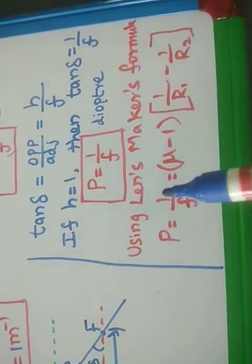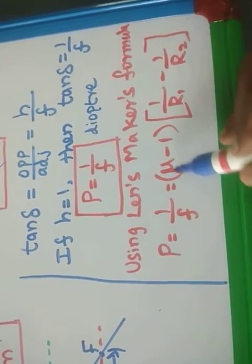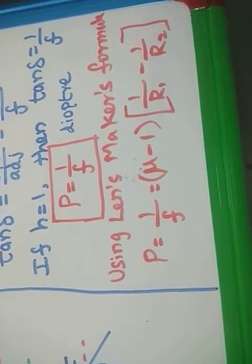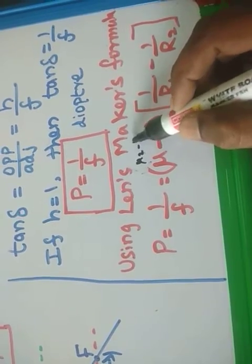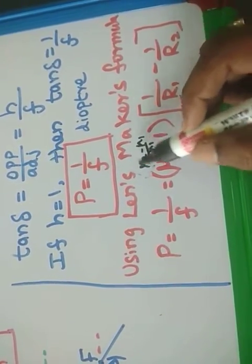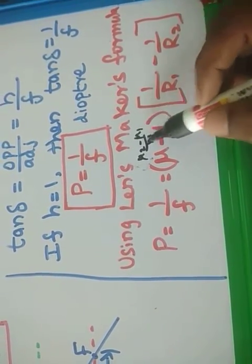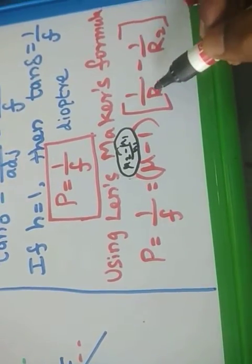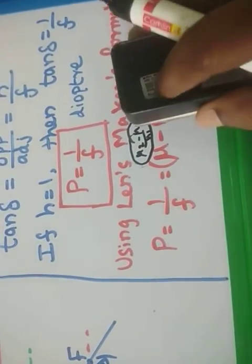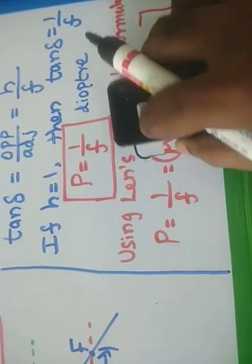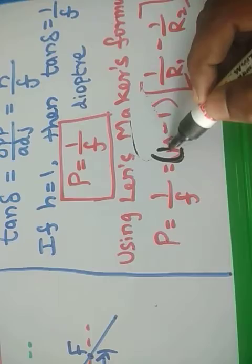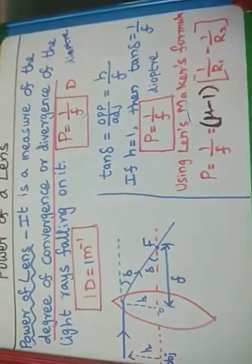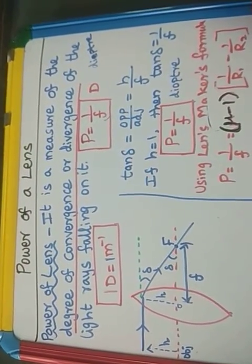By using the lens maker's formula, we derived that 1 over f equals mu minus 1. Don't confuse students — in the lens maker's formula, 1 over f equals (mu2 minus mu1) over mu1. Here mu2 is the refractive index of the lens medium and mu1 is the surrounding medium. Since the refractive index of air is 1, it simplifies to mu minus 1. So the full expression is P equals (mu minus 1) times (1 over R1 minus 1 over R2), which is the power of a lens in terms of refractive index and radius of curvature. Power of a lens means degree of convergence or divergence of a lens.